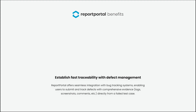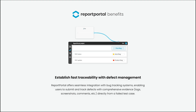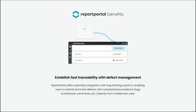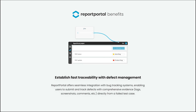And the next benefit is a great addition to the previous one: establish fast traceability with defect management. In ReportBottle, it is possible to set up integrations with bug tracking systems, where you can submit and track defects with full evidence – all logs, screenshots, comments, and so on – directly from a failed test case into your bug tracking system.